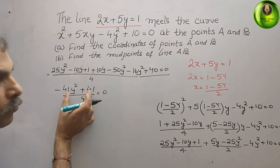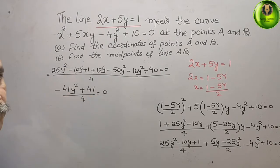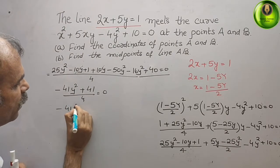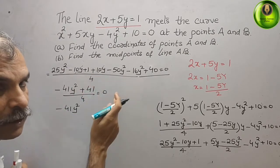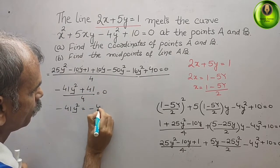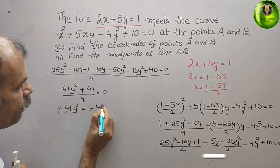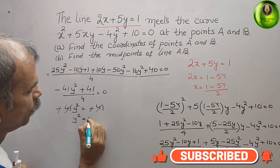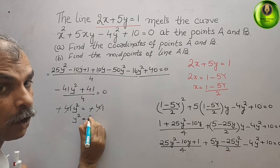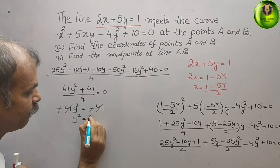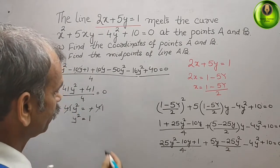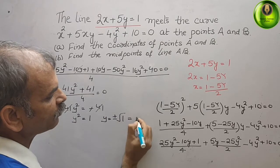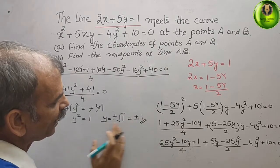Cross-multiplying gives -41y² + 41 = 0, so 41y² = 41, meaning y² = 1. Therefore y = ±√1 = ±1.